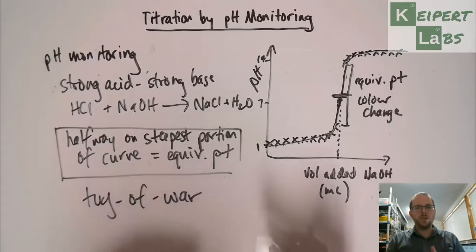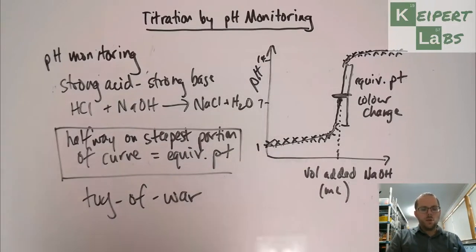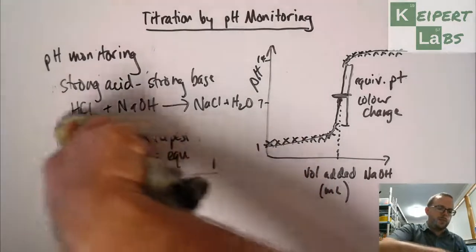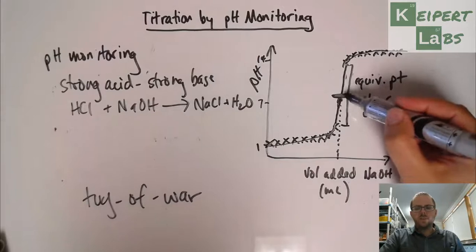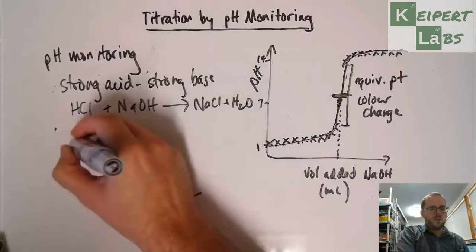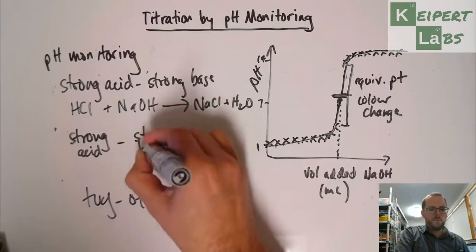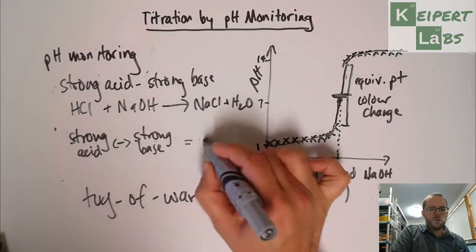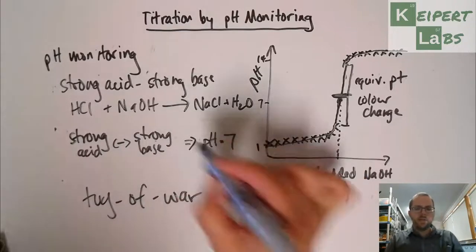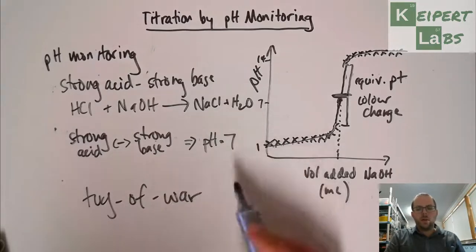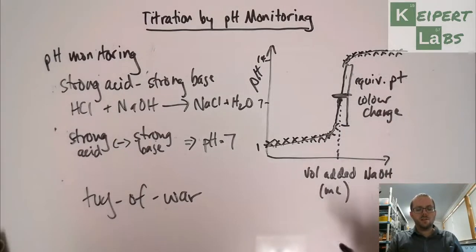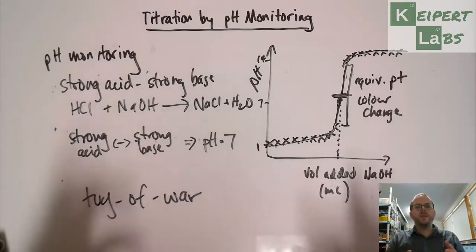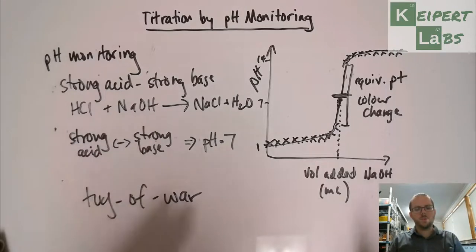So in this graph, this curve that we've developed over here, we see that the pH around the equivalence point is very close to 7. So strong acid with strong base equals pH 7. We can monitor the pH and identify that the point at which we reach the equivalence point is going to be very close to 7. Because strong versus strong, we're going to end up pretty much in the middle. If both sides are of equal strength in a tug-of-war, it stays pretty much in the middle.